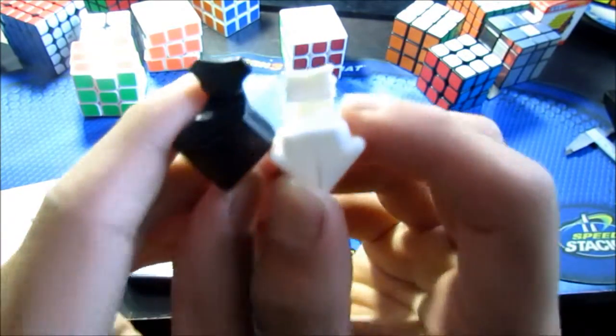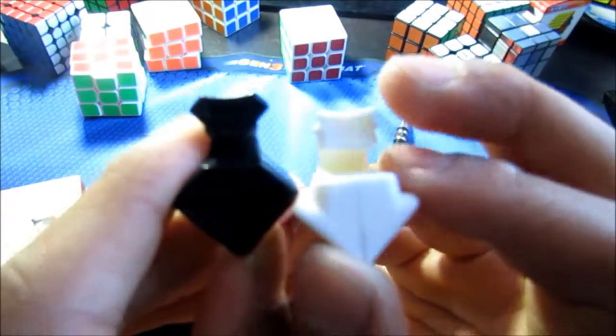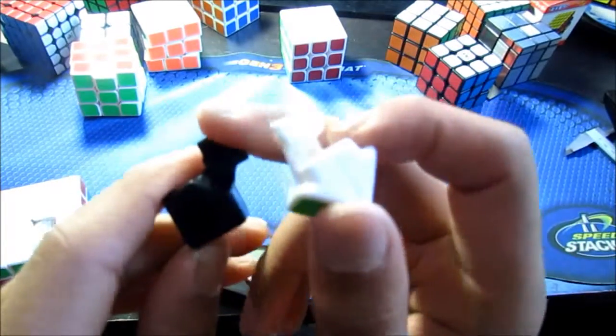Where the Aosu has this weird thing on the base here, and the Shengshou is just like this.